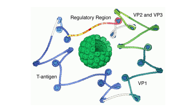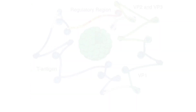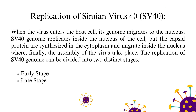VP1, VP2, and VP3 are the virion proteins that form the viral capsid. When the virus enters the host cell, its genome migrates to the nucleus. The SV40 genome replicates inside the nucleus, but the capsid proteins are synthesized in the cytoplasm and migrate into the nucleus, where the assembly of the virus takes place. The replication of the SV40 genome can be divided into two distinct stages: early and late.